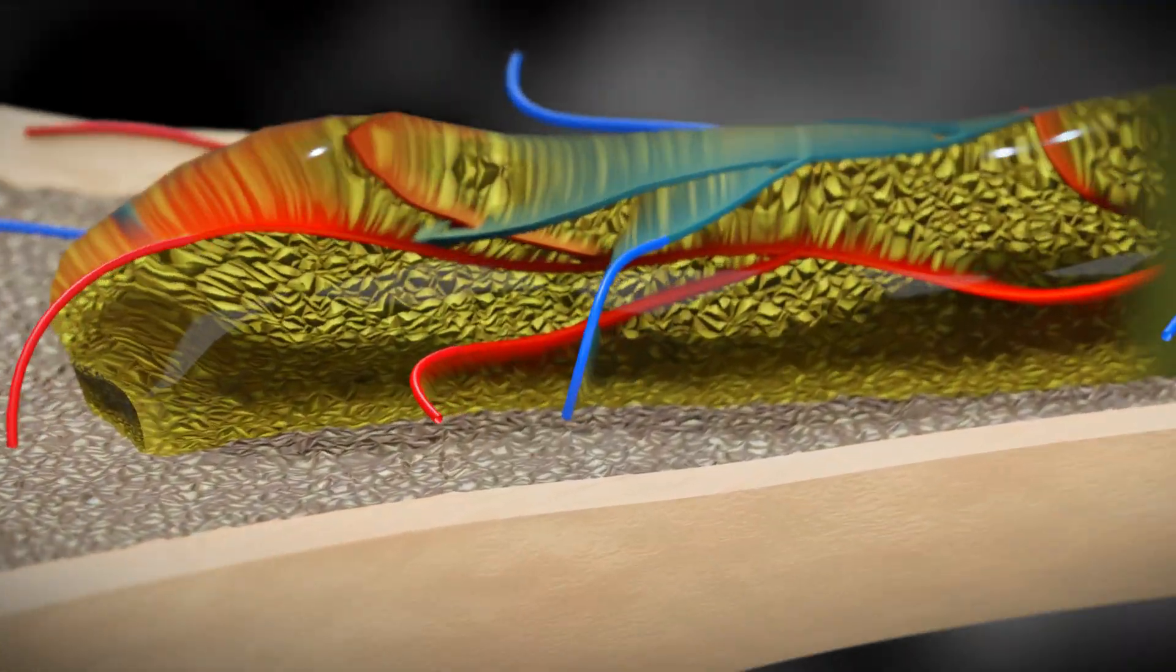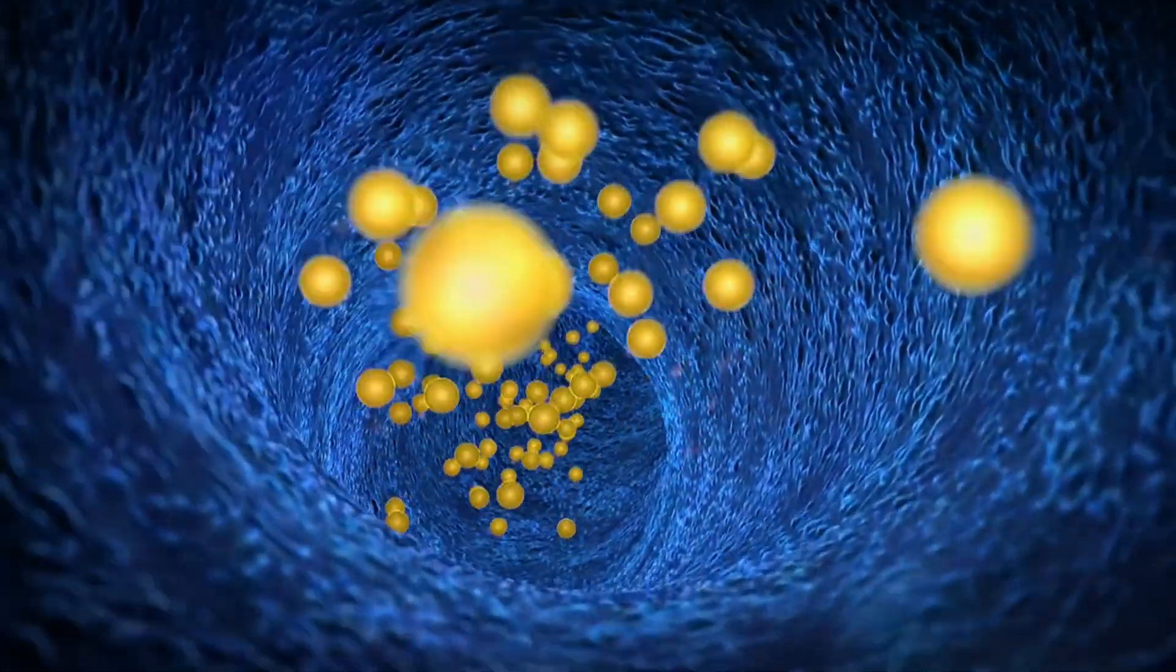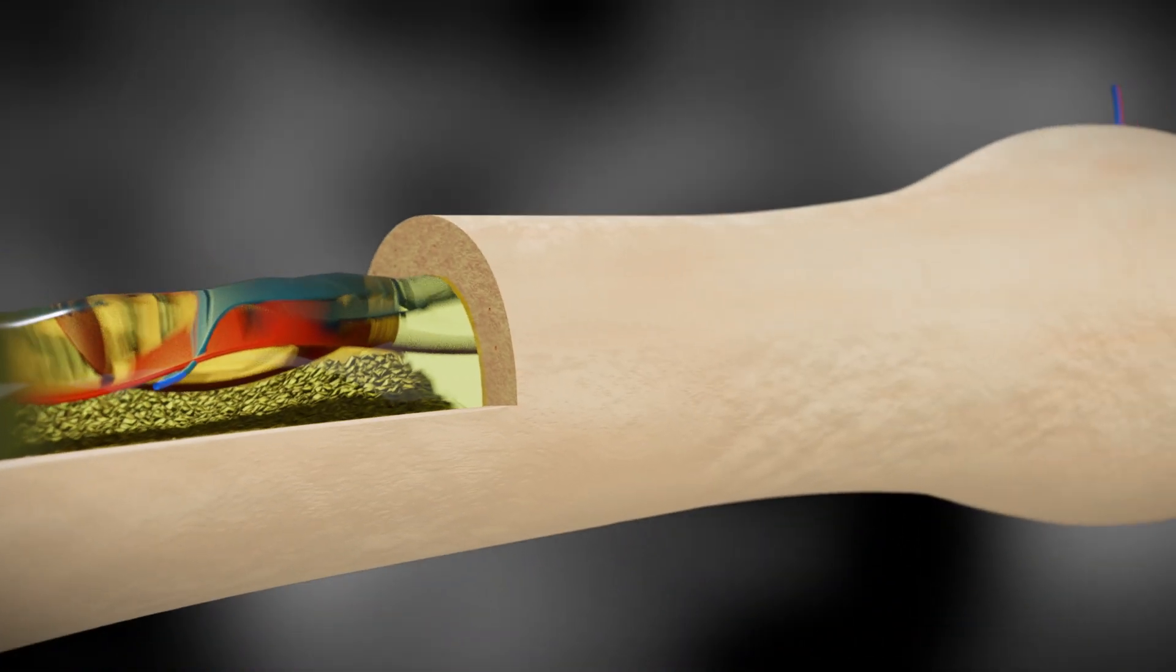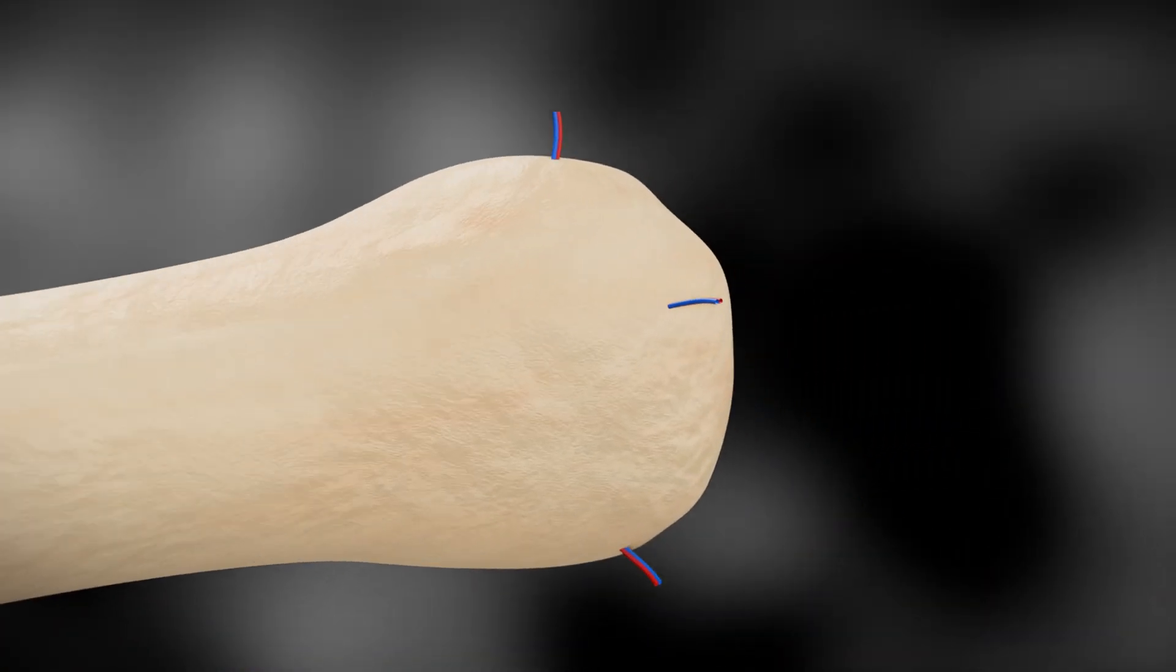These are blood vessels that supply oxygen and nutrients to the bone. If you notice, these are the same blood vessels that come out of the bone here.